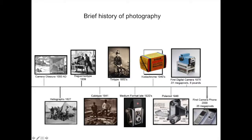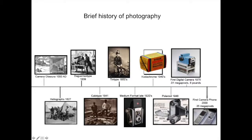We're going to talk about the evolution of photography. We start out with the camera obscura, go on to heliographs, daguerreotypes, calotypes, tintypes, glass negatives, albumen prints, film cameras, color photography, Polaroids, digital cameras, and now cell phones. This is just a few of the different evolutionary components that photography has gone through.